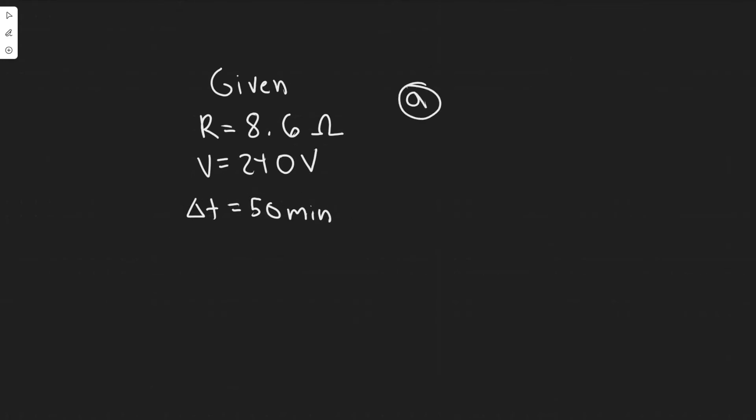For part A, they're asking us to find the current in the element. Whenever they say find current, I know we're probably going to be using Ohm's law, which is V equals IR—the voltage is equal to the current times the resistance. If I'm solving for current, I can divide by the resistance, and as long as we have voltage and resistance, which we're given, we can solve for the current.